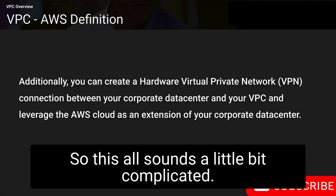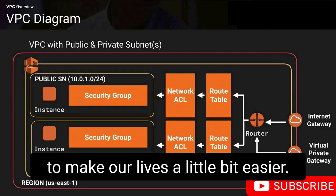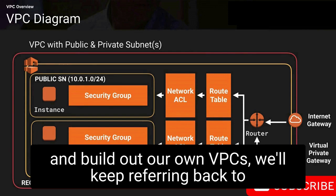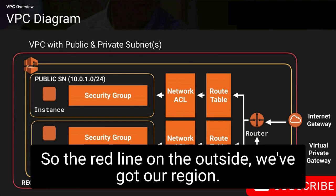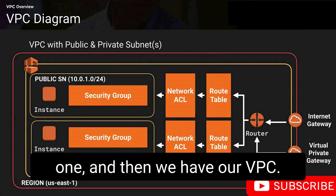This all sounds a little bit complicated, so let's have a look at a network diagram to make our lives a little bit easier. As we go through the next lecture and build out our own VPCs, we'll keep referring back to this diagram. The red line on the outside represents our region — in this example, US East 1 — and then we have our VPC.